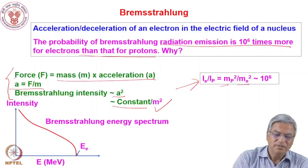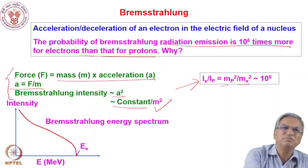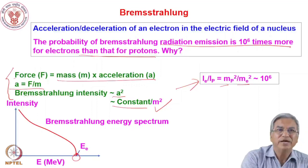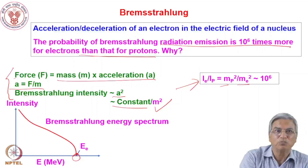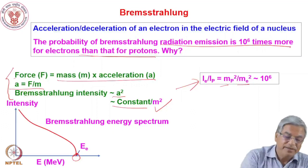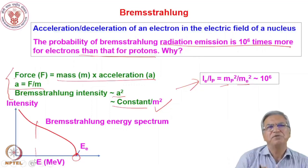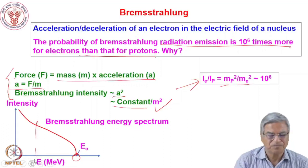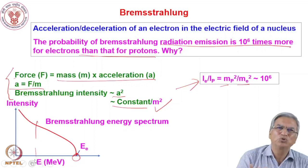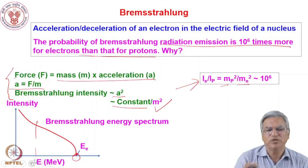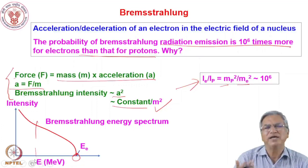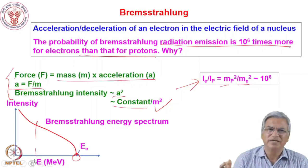The Bremsstrahlung spectrum is a continuous energy spectrum. If an electron has energy E₀, the maximum Bremsstrahlung energy equals E₀, and the average energy is about one third of the maximum. This is a mechanism to produce gamma rays from electrons. High-energy electron accelerators can bombard high-Z materials like tantalum or tungsten to produce intense photon sources with a broad energy spectrum.